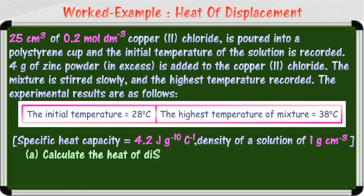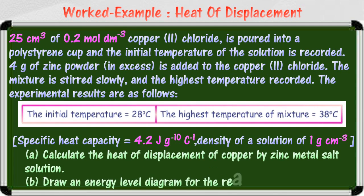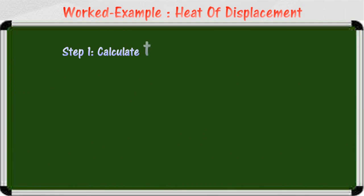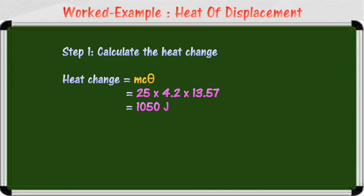Calculate the heat of displacement of copper by zinc metal from the salt solution, and draw an energy level diagram for the reaction that occurs. The first step is to calculate the heat change using the formula: heat change = mcΔT, where m is the mass of the solution, c is the specific heat capacity of the solution equal to 4.2, and Δt is the temperature change. In this example, the heat change is 1050 joules.